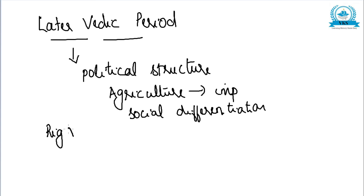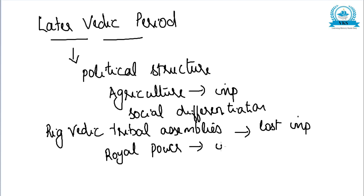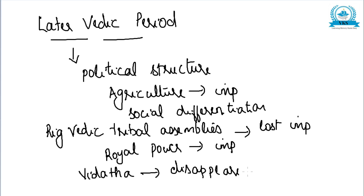Rig Vedic tribal assemblies lost their importance. In the early Vedic period, the tribal assemblies were important, but in the Later Vedic Period, these Rig Vedic tribal assemblies lost their importance. Royal power — that is, the power of the king — increased at their cost. The Vidatha, which existed during the early Vedic period, completely disappeared in the Later Vedic Period.